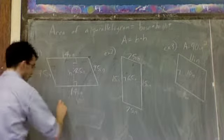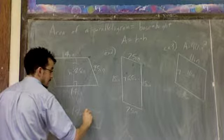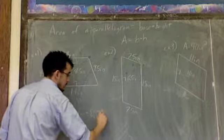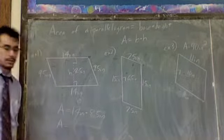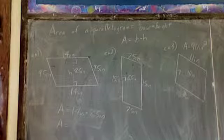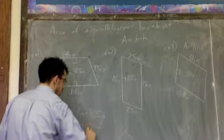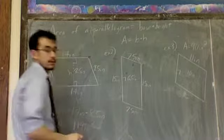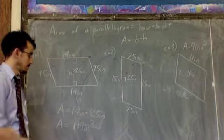So I'm going to write area equals 14 inches, my base, times my height, 8.5 inches. And that is going to give me the answer. I'm just going to multiply those two, and I'm going to get 119 square inches, or you can say inches squared. And that problem is done. That's all you have to do.